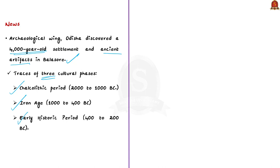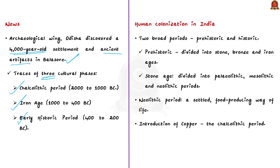Human colonization in India is divided into two broad periods: the prehistoric period, before the emergence of writing, and the historic period, after the emergence of writing. The prehistoric period is further divided into stone, bronze, and iron ages. The stone age is further divided into the Paleolithic period, Mesolithic period, and Neolithic period.